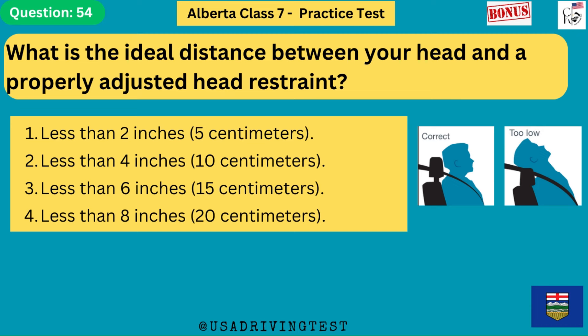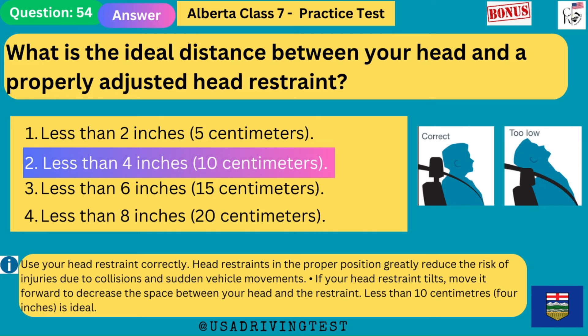What is the ideal distance between your head and a properly adjusted head restraint? 1. Less than 2 inches (5 cm). 2. Less than 4 inches (10 cm). 3. Less than 6 inches (15 cm). 4. Less than 8 inches (20 cm). The answer is 2: less than 4 inches (10 cm). Head restraints in the proper position greatly reduce the risk of injuries. If your head restraint tilts, move it forward to decrease the space between your head and the restraint — less than 10 centimeters (4 inches) is ideal.